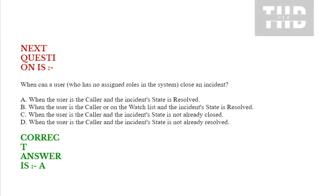Next question: When can a user who has no assigned roles in the system close an incident? Option A: when the user is the caller and the incident state is resolved. Option B: when the user is the caller or on the watch list and the incident state is resolved. Option C: when the user is the caller and the incident state is not already resolved. Correct answer is option A.